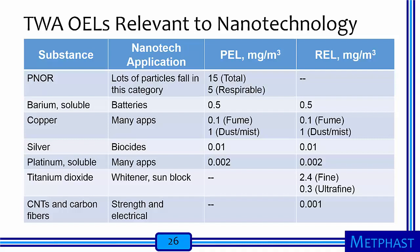Here I've added to the list of example OELs relevant to nanotechnology, showing the permissible exposure limit alongside the recommended exposure limit from NIOSH. NIOSH does not have a REL for particles not otherwise regulated, so the OSHA value is used. In many cases the REL equals the PEL. For TiO2, the OSHA PEL for PNOR applies at 15 mg/m³, whereas the new REL is almost 10 times lower for fine and 50 times lower for ultrafine particles. For carbon nanotubes, the OSHA PEL is again 15 mg/m³, whereas the new REL is 0.001 mg/m³ — 15,000 times lower.